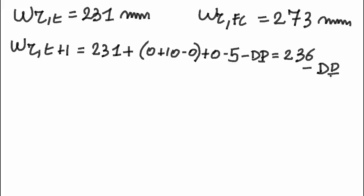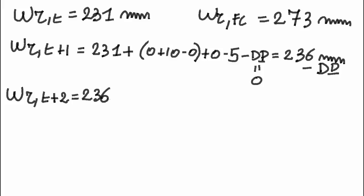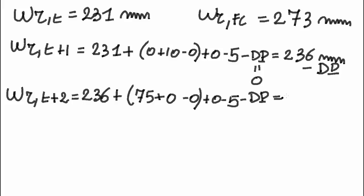If the next day we have some irrigation, the water content at time t+2 is the previous day's 236 millimeters, plus irrigation of 75 millimeters, plus rainfall minus runoff (zero), plus capillary rise (zero), minus evapotranspiration of 5 millimeters, minus deep percolation. This gives 306 minus deep percolation.